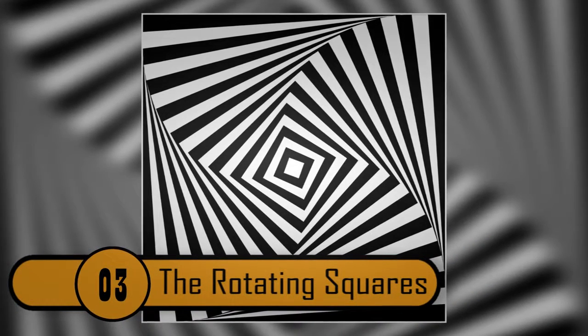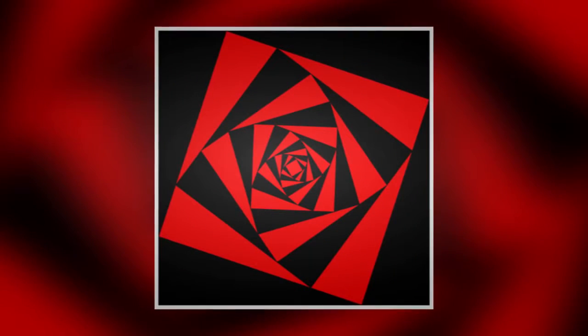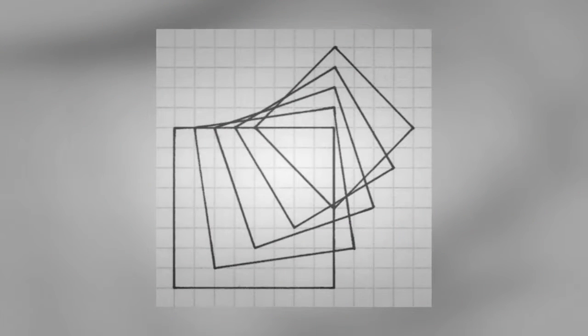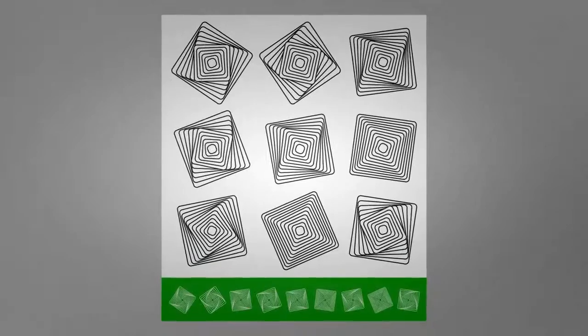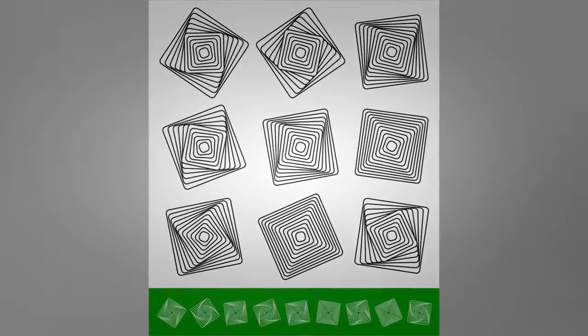The Rotating Squares. If you look at these squares and keep your eyes still, nothing moves. Now, move your eyes. You should notice the squares on the outside start moving and swerving. It's not the photo, it's actually your eyes playing a trick on you. Once you hold your eyes still again, these squares will remain still as well. This is one of the optical illusions that will blow your mind.